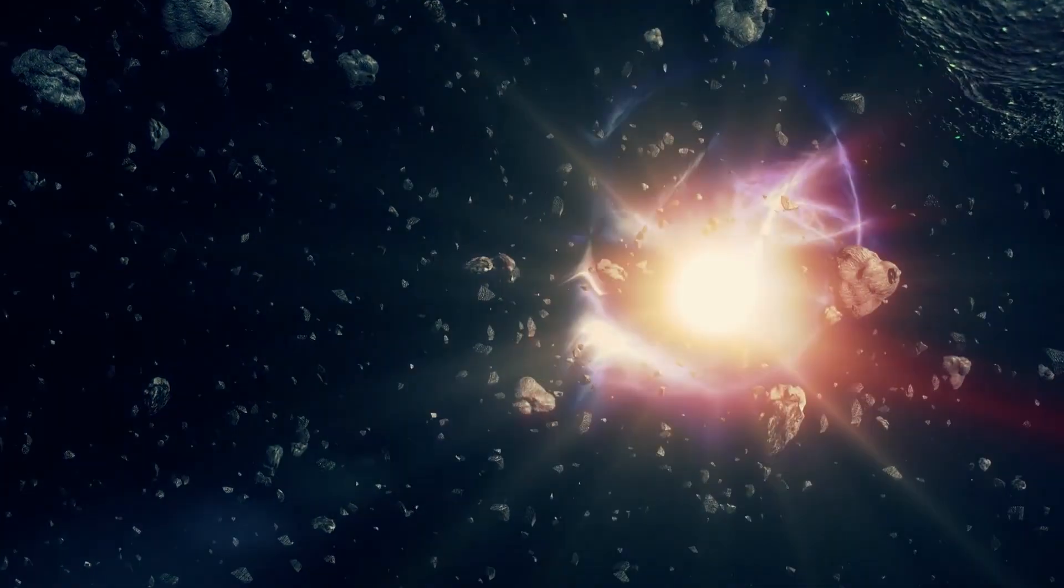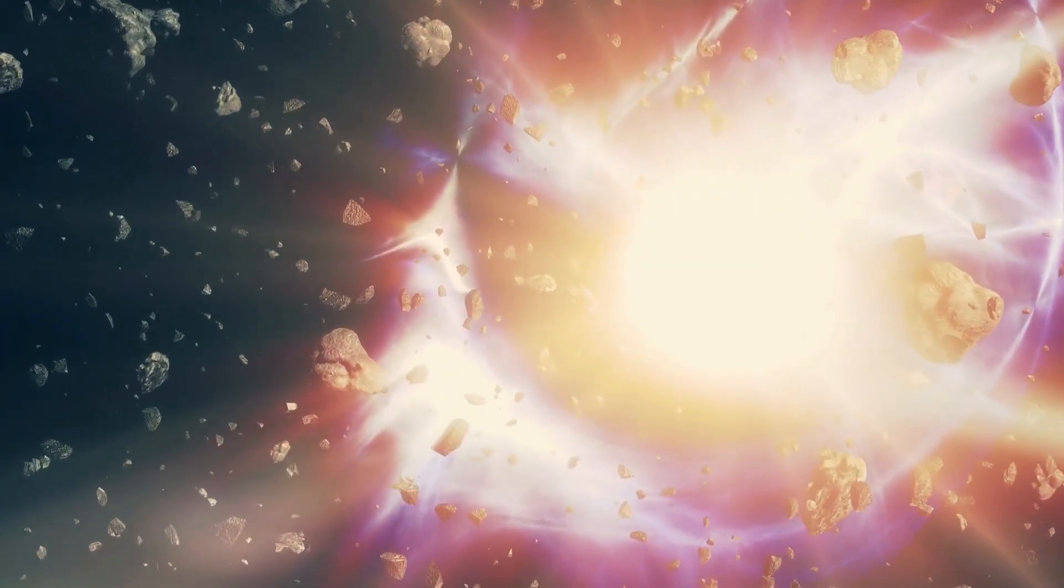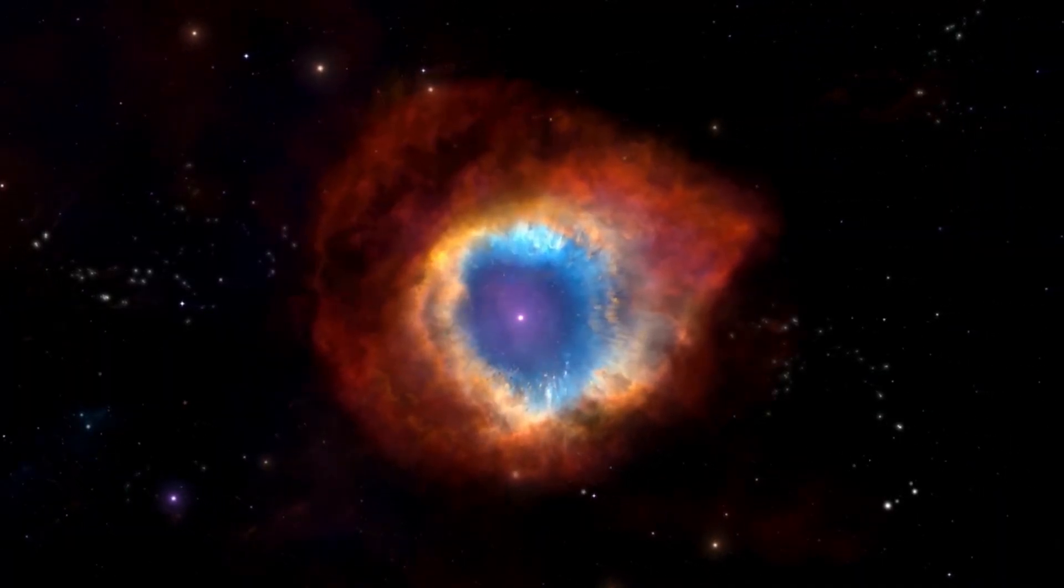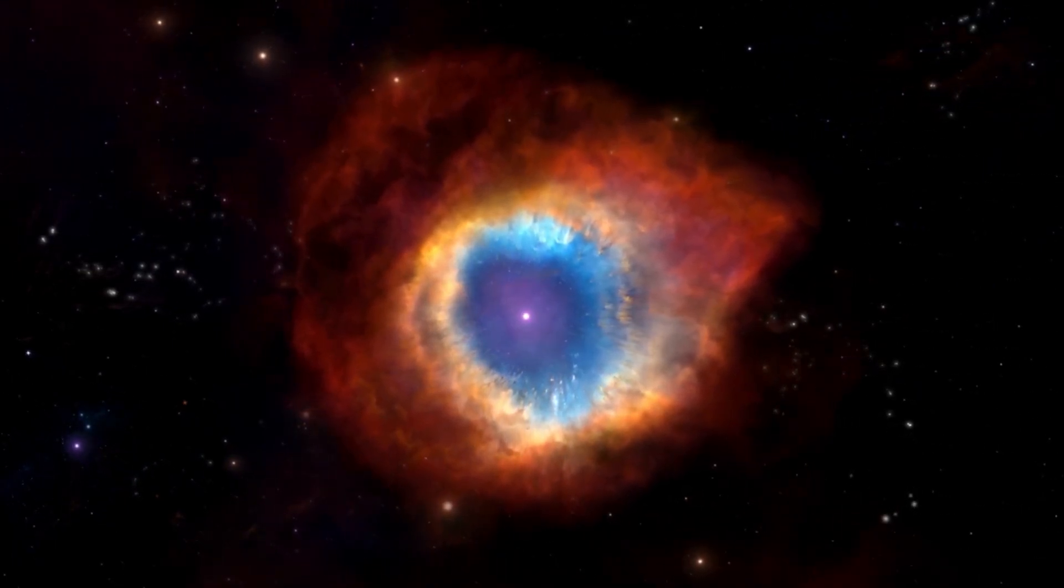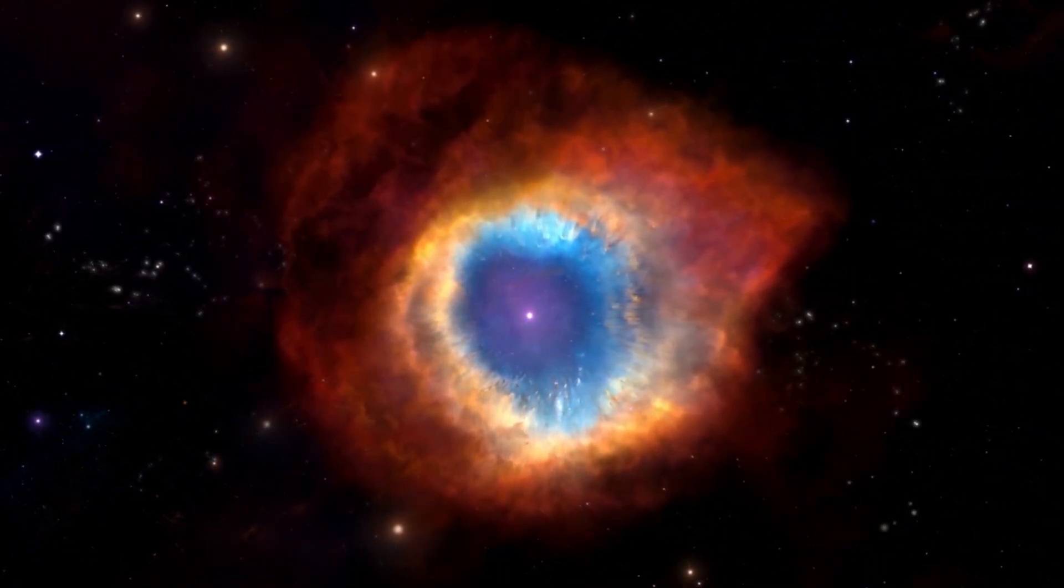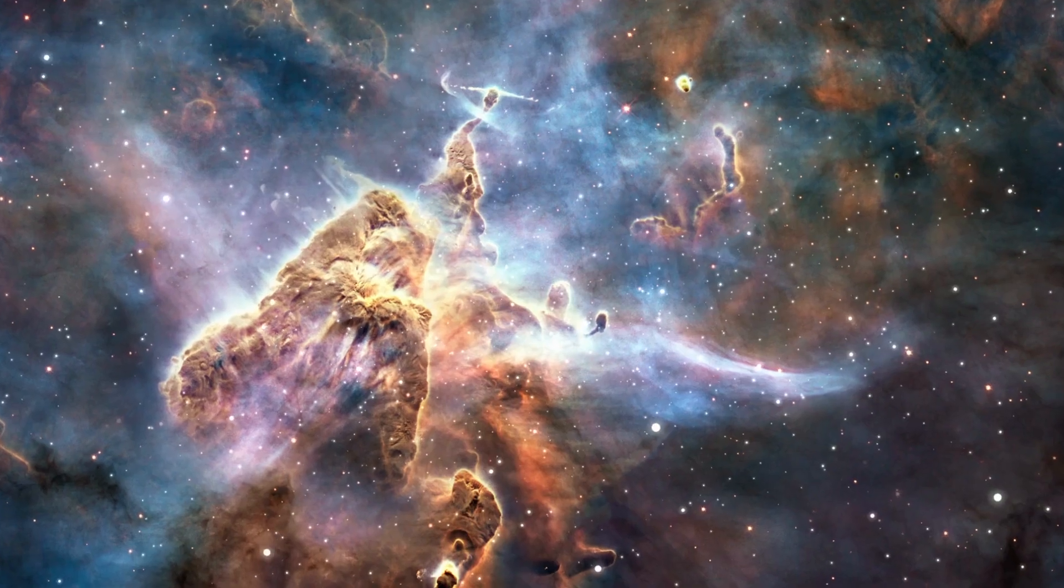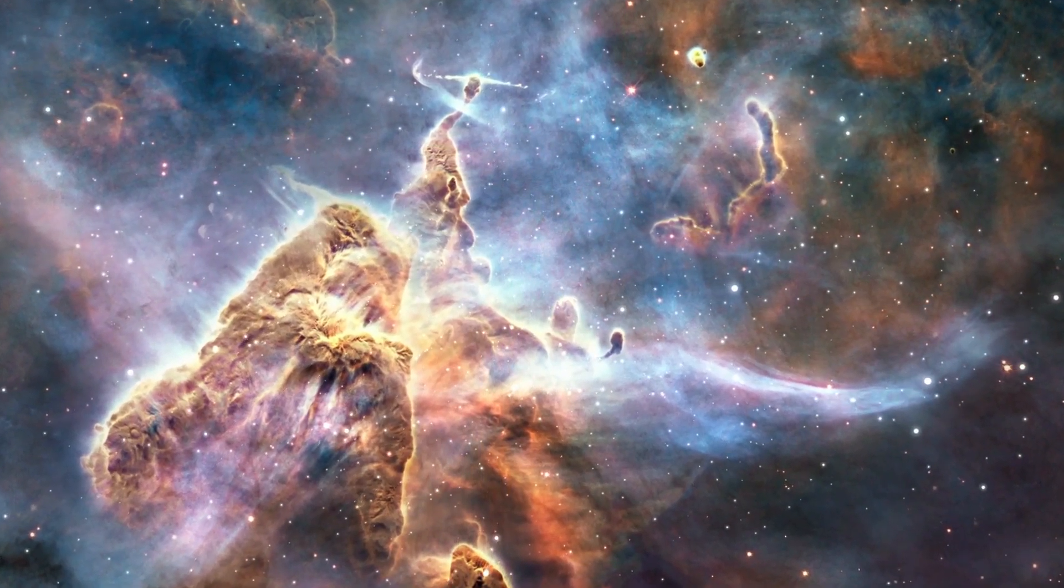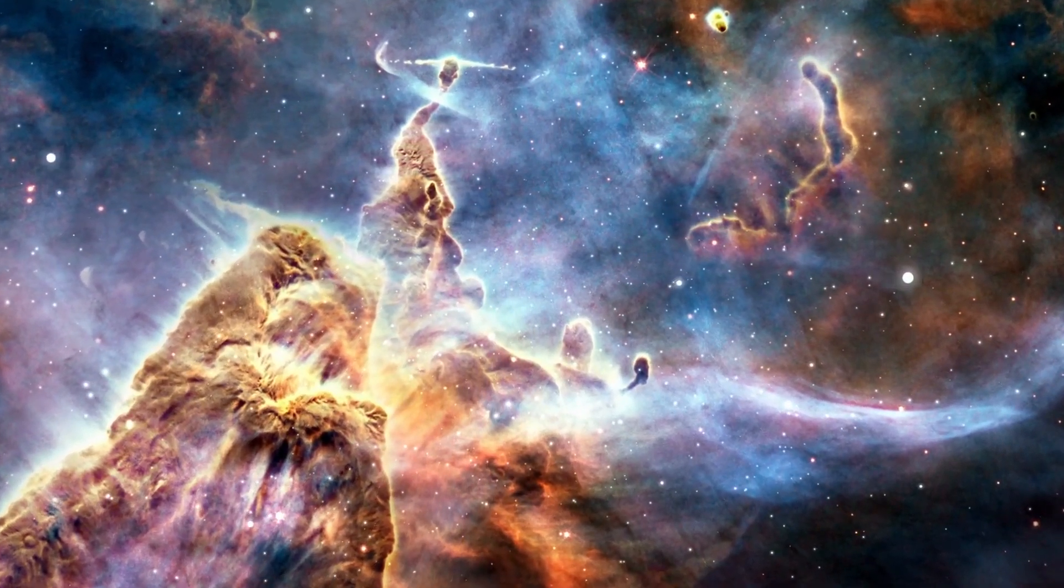A supernova explosion of the magnitude of DES-16C2NM or any other Type II supernova would have significant consequences for the surrounding galaxy and potentially even for the entire universe. This explosion would release an enormous amount of energy, primarily in the form of neutrinos and photons, which would interact with the surrounding gas and dust to create a shockwave that would travel outwards at speeds of thousands of kilometers per second. This shockwave would cause the surrounding gas and dust to heat up and emit a burst of radiation that would be detectable across a wide range of wavelengths, including visible light, radio waves, and x-rays.